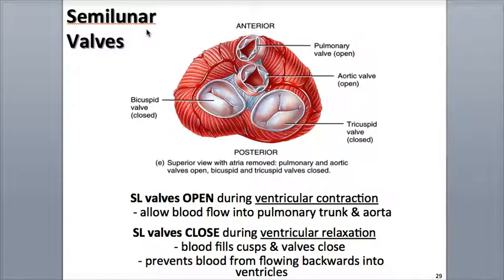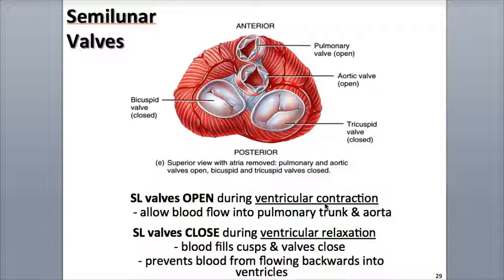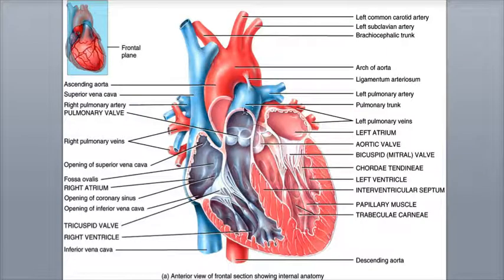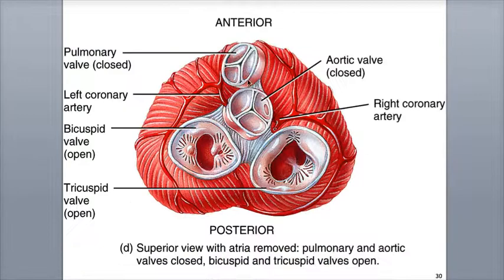Now let's take a look at how the semilunar valves work. The aortic and pulmonary semilunar, or SL valves, consist of three cusps that resemble crescent moons. High-pressure blood ejected out of the ventricles during ventricular contraction passes through the open semilunar valves and into arteries. The pulmonary valve opens into the pulmonary trunk, and the aortic semilunar valve opens into the ascending aorta. The valves then close during ventricular relaxation, preventing blood from flowing backwards into the ventricles.